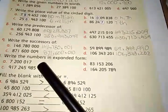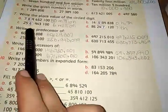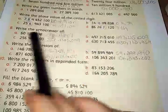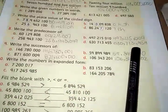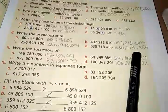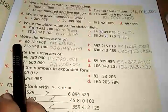question number 8 of exercise 1a. The question is write the predecessor of these numbers. As we know, the predecessor is a number which is one number before the given numbers. In part A